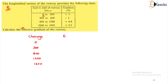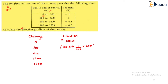Next, we start writing the elevations. For chainage 0, let us choose an elevation equal to 100.0. For chainage 200, observe that from 0 to 200 the gradient is plus 1%. So we add 1% of 200 to the previous elevation of 100.0, giving us 102.0.